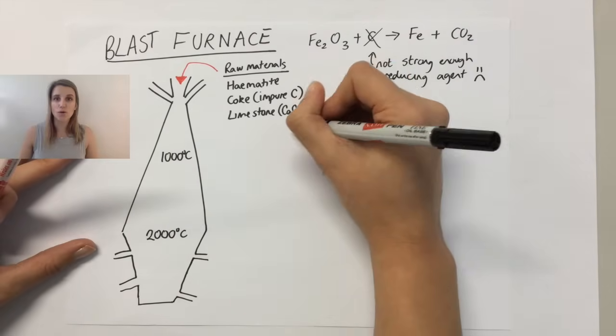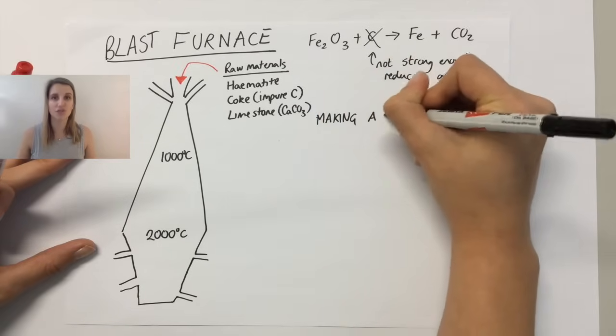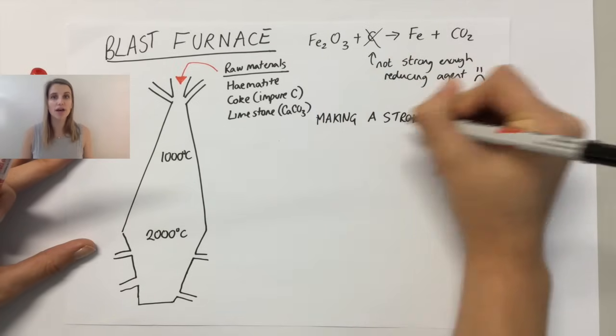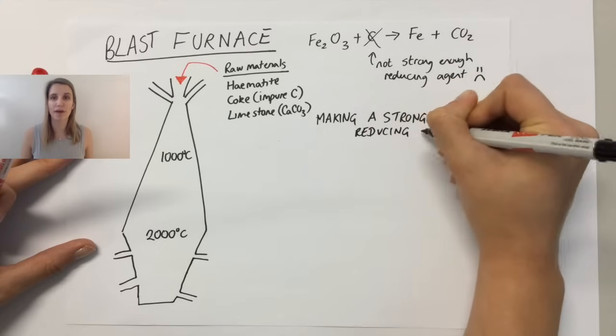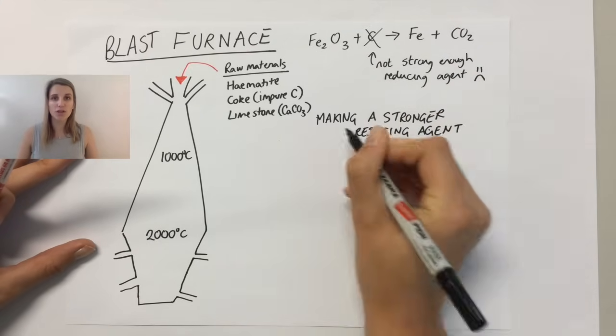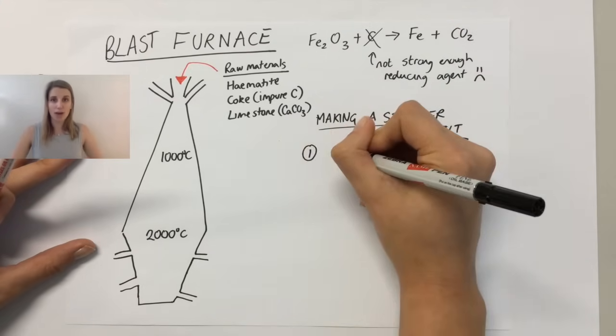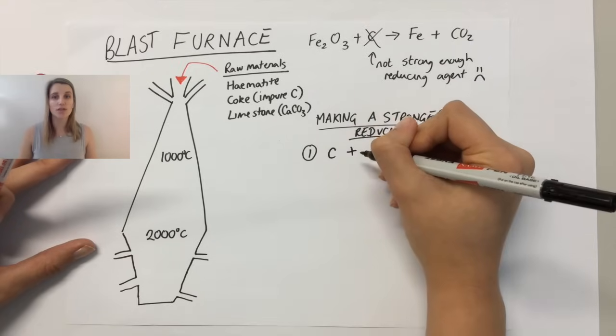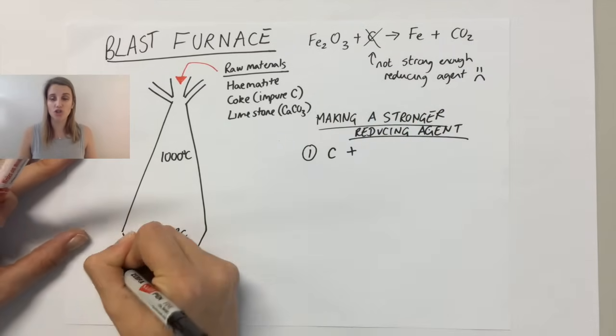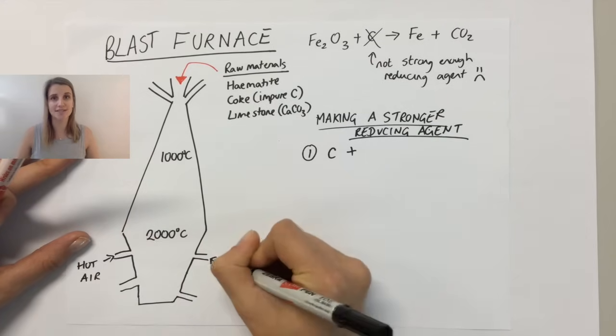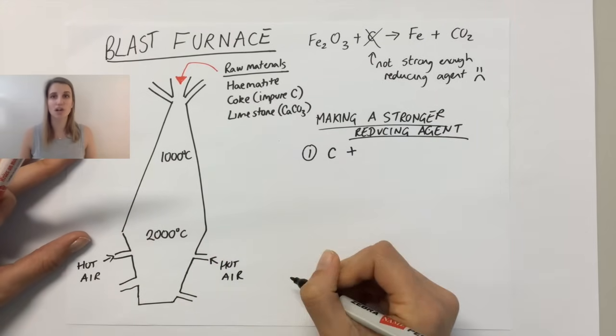So the mission is that we need to make a stronger reducing agent first. Something that's stronger and able to pull that oxygen away from the iron. The way that we do this is, the first thing that happens is, in the heat, the carbon reacts with oxygen that comes in through the sides, this hot air vents here, to make carbon dioxide.